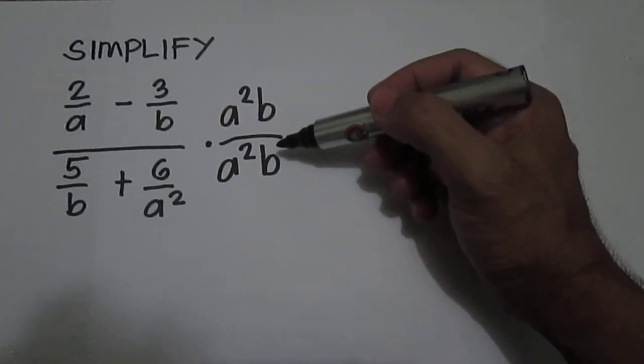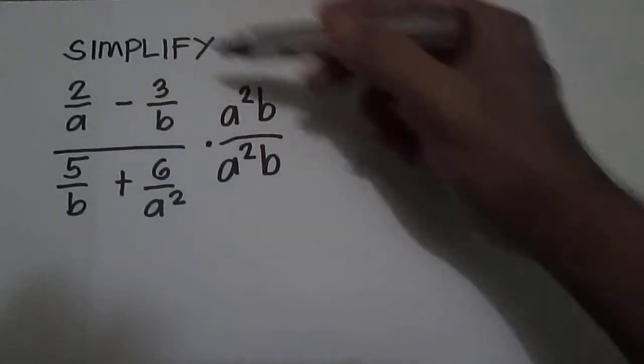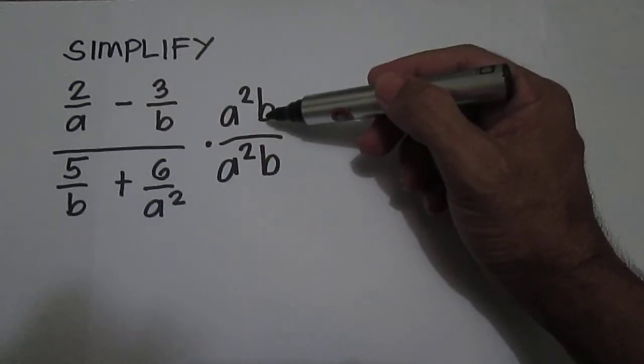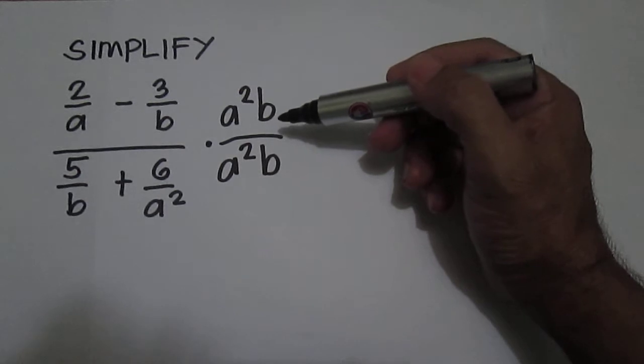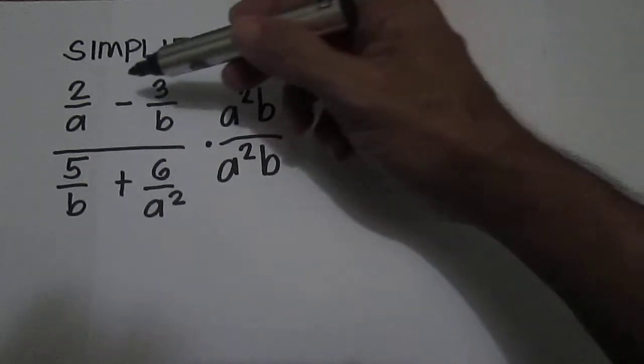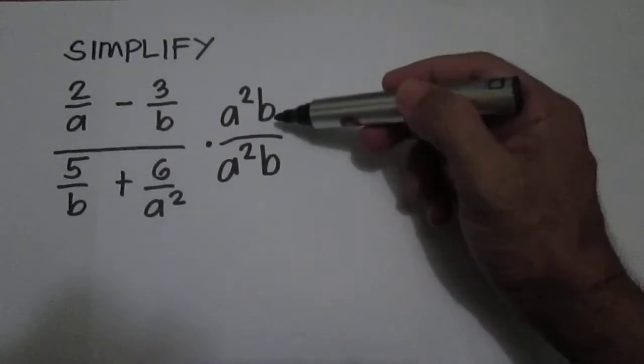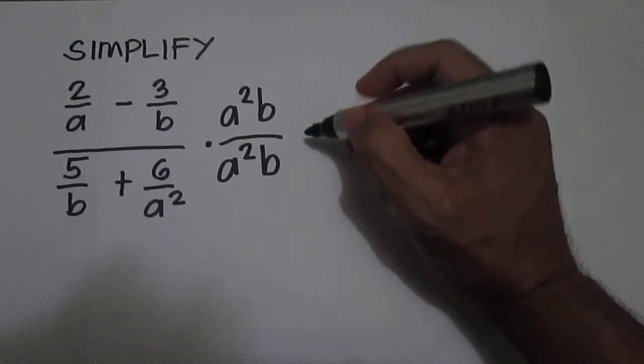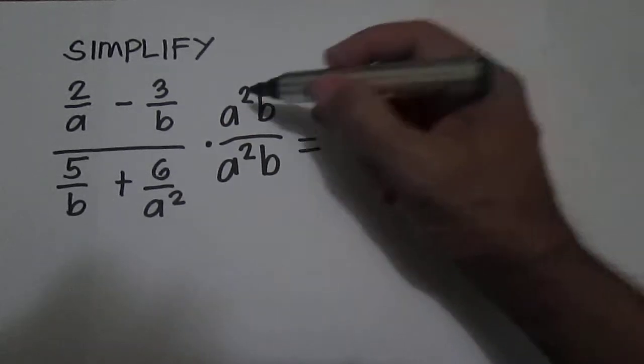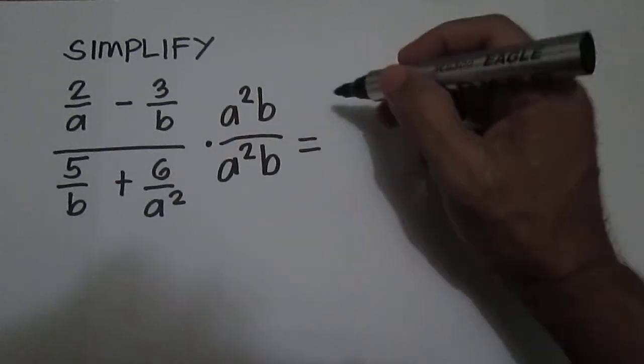So after this, you multiply 2 over a by a squared b. So 2 over a times a squared b is equal to a squared over a is a. So you have